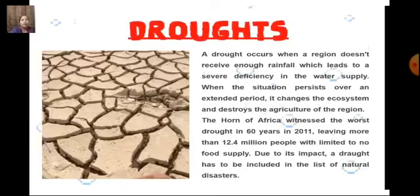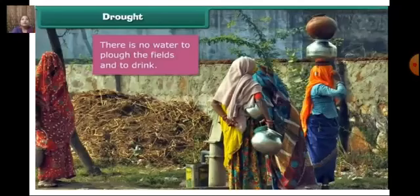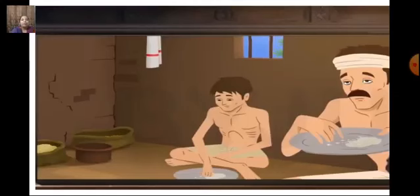Due to its impact, drought must be included in the list of natural disasters. When an area doesn't get enough rainfall for a long period, the water level inside the earth also drops. People do not get water for drinking or agriculture, impacting agricultural yield. The livestock perishes, animals die, and humans also die because of hunger. A drought is an unusually long period without rain that causes problems in nature and for humans — there is no water to plow the fields or to drink, leading to low yield and food scarcity.